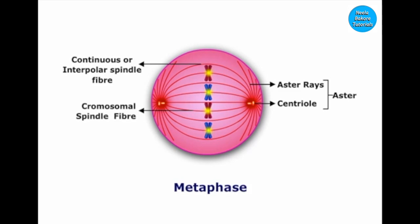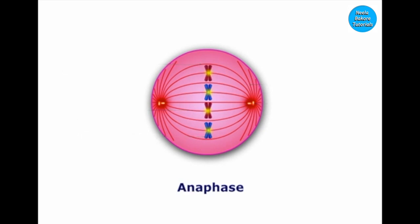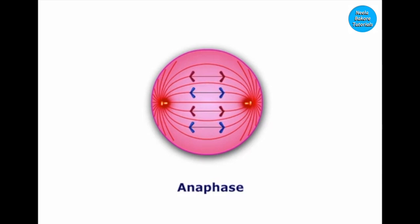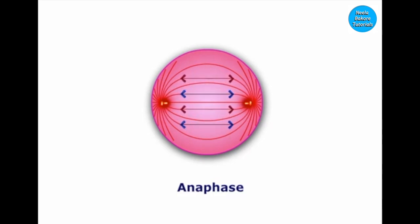The chromosomal spindle fibers attach to the kinetochores of the chromosomes on their side. The cell now enters anaphase, during which the chromosomal spindle fibers contract, the centromere splits, and the two chromosomes separate and move towards the opposite poles.